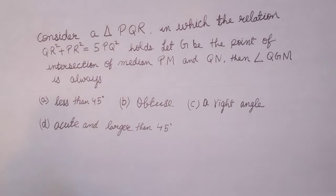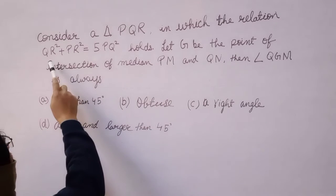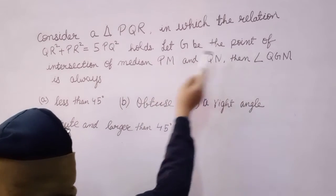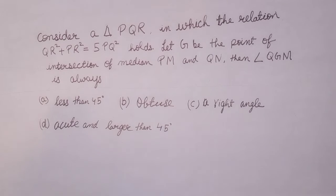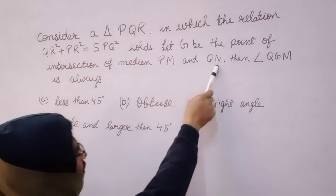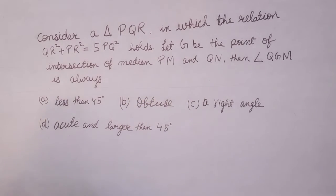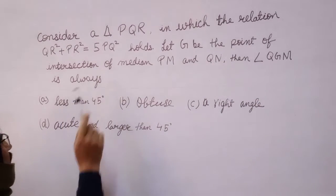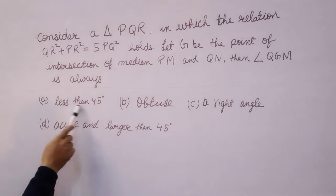Consider a triangle PQR in which the relation QR squared plus PR squared equals 5 PQ squared holds. Let G be the point of intersection of median PM and QN. Then angle QGM is always: